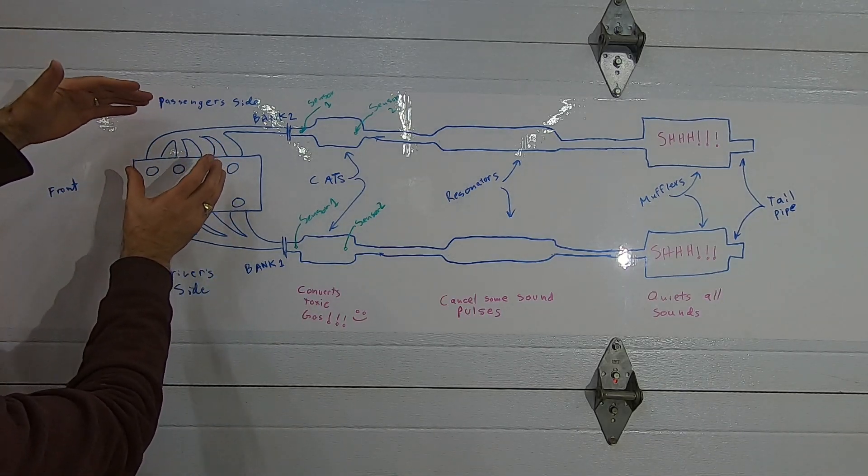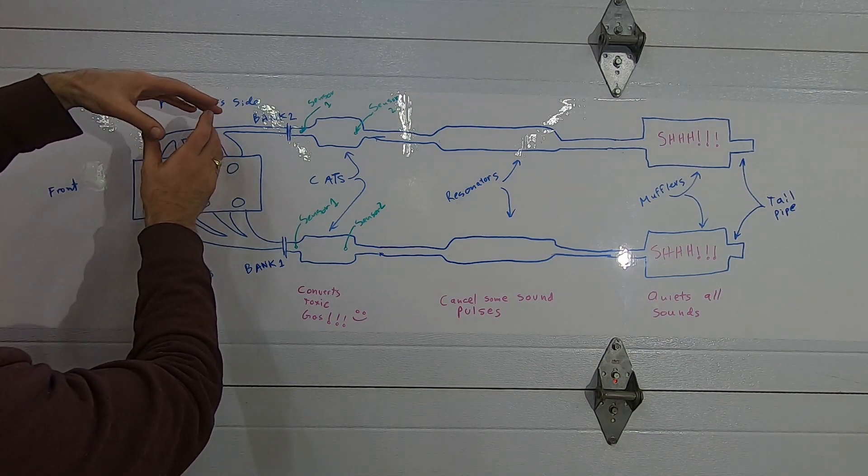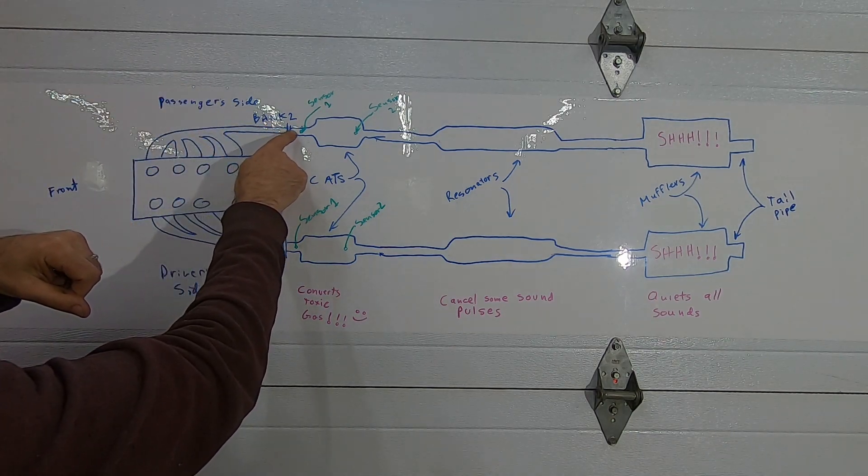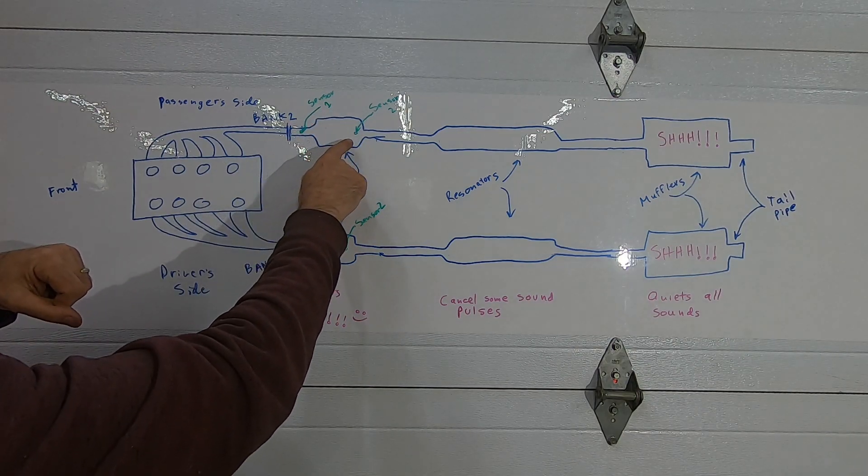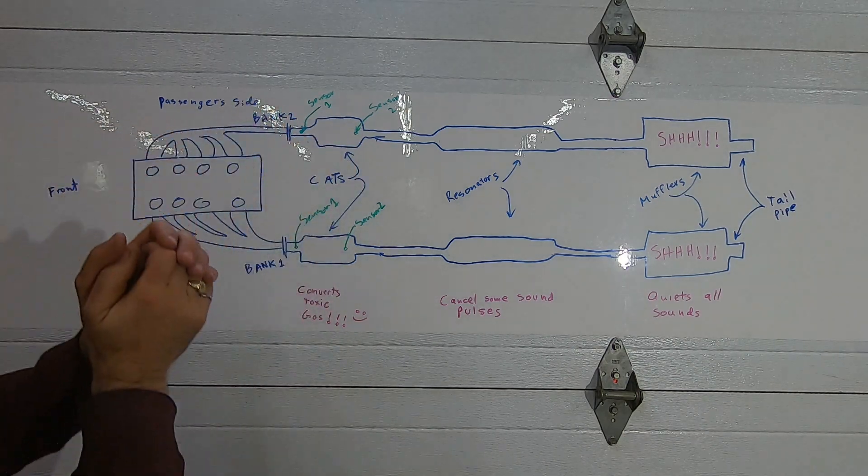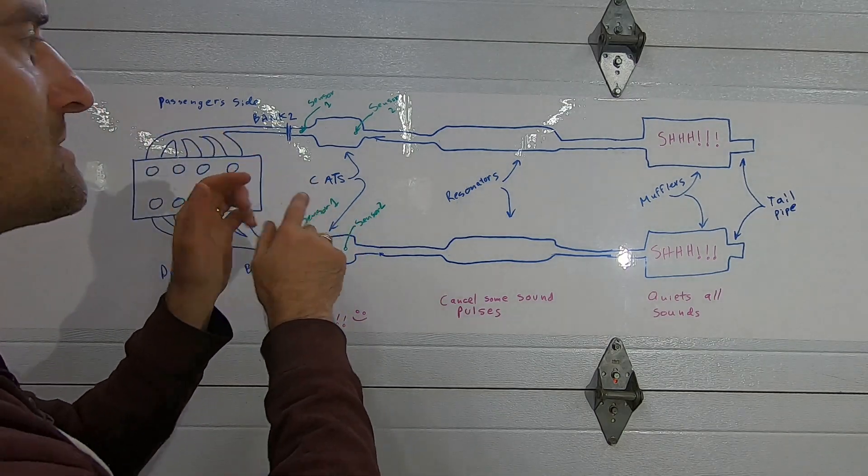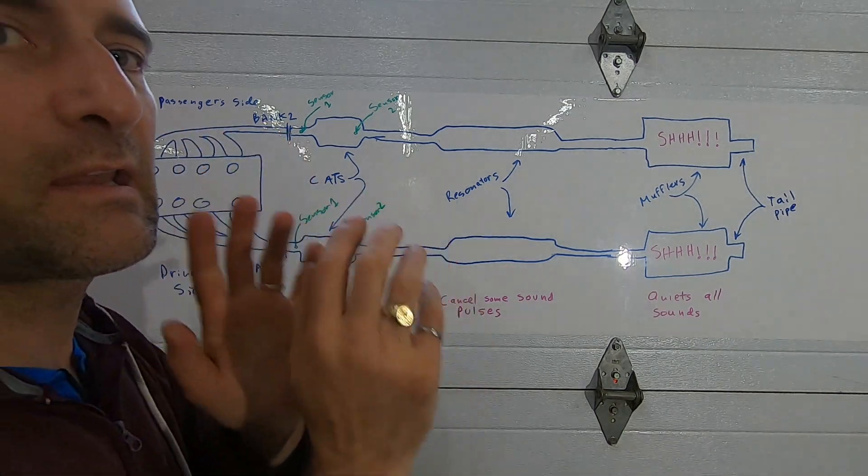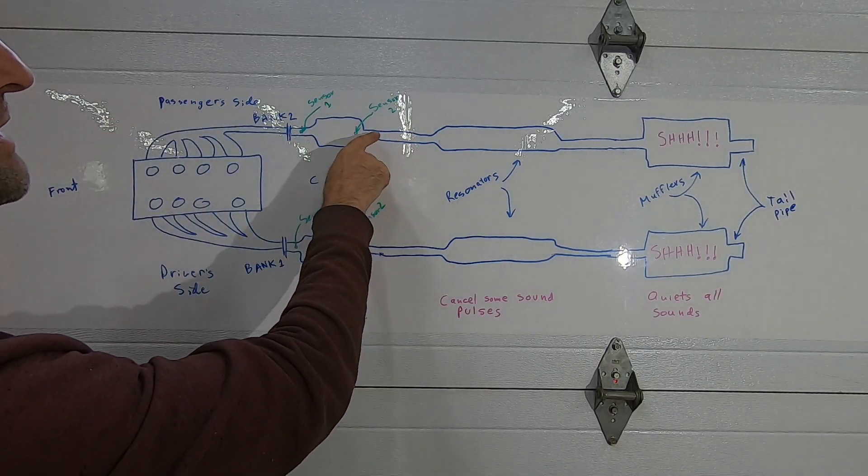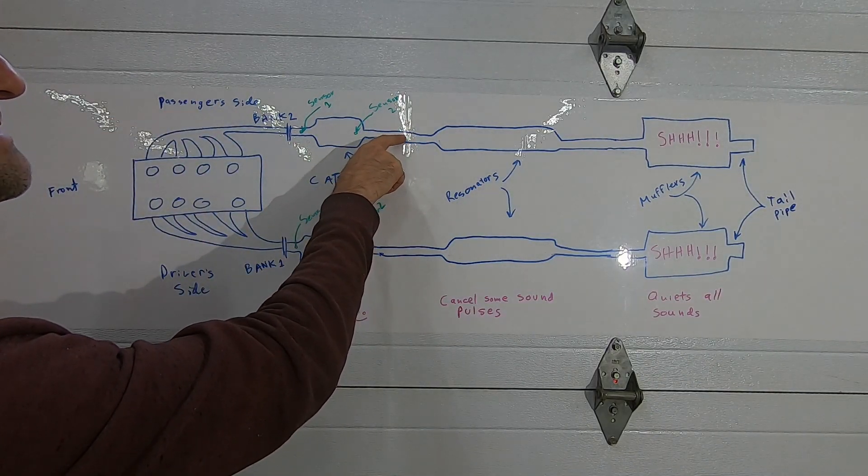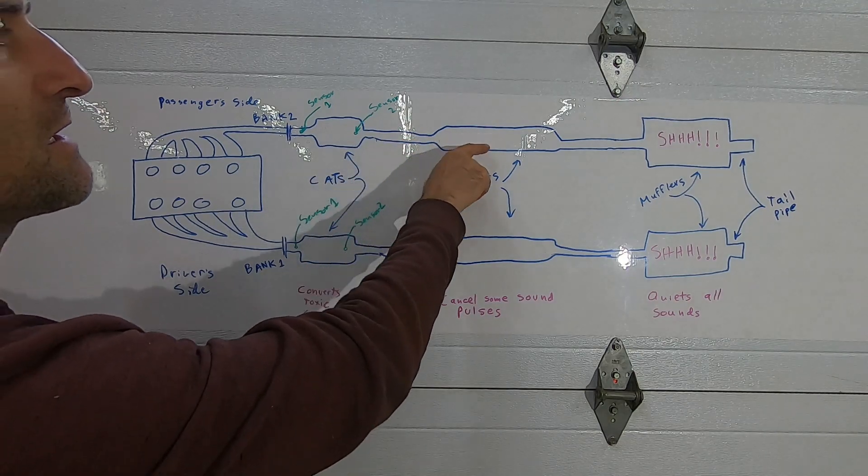The exhaust manifold takes all the gases from all the cylinders' exhaust ports on one side of the engine, groups them together, and all the exhaust gases flow into the catalytic converter. The catalytic converter converts the toxic gases that come out of the engine to less toxic gases that head downstream.